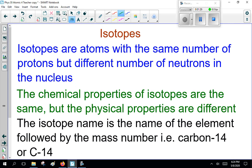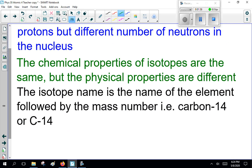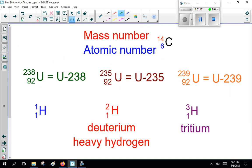So, the isotope name is the name of the element followed by the mass number, for example, carbon-14 or C-14. Now, here, for example, one isotope of carbon is carbon-14, 14-6 carbon or C-14.